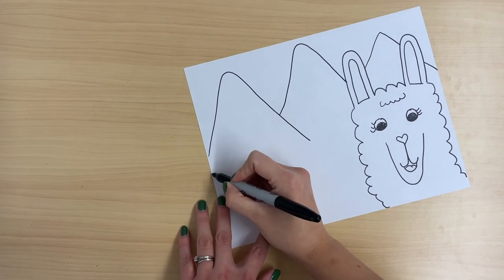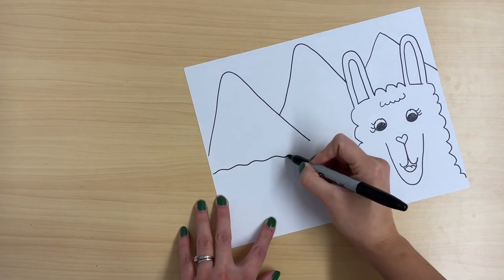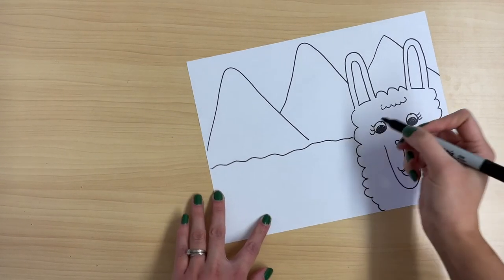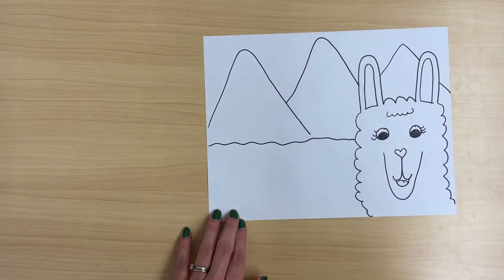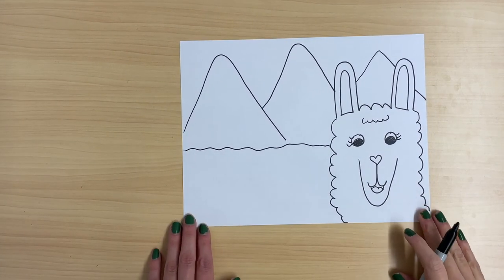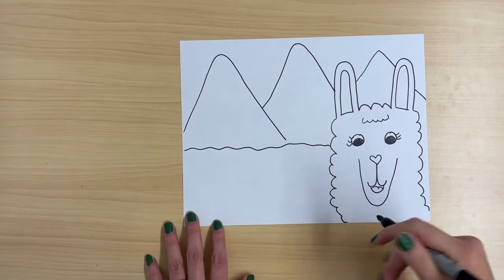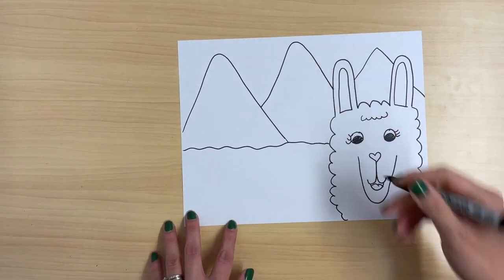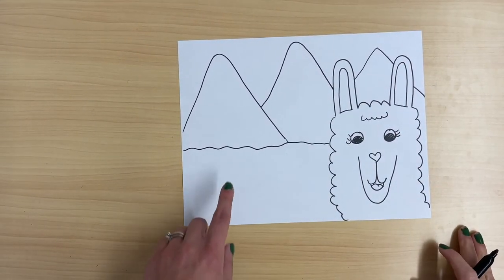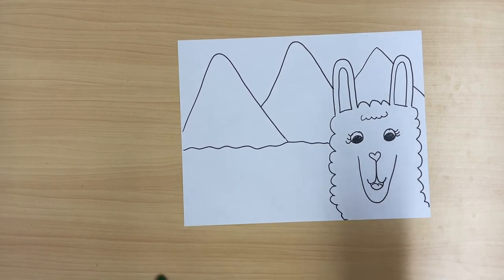Next, I'm going to draw a line on the bottom. It's going to be a little bit wavy and this is going to show where the mountains stop and the ground begins. Okay, now you can use your imagination and decorate the background however you want. You can add more llamas, you can add trees or people, whatever you want to do.